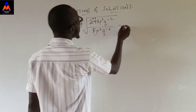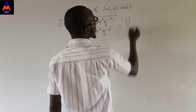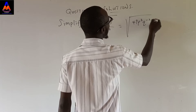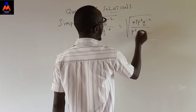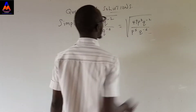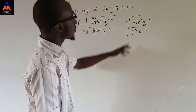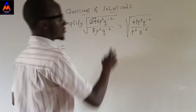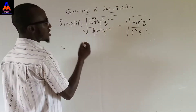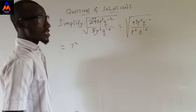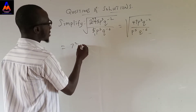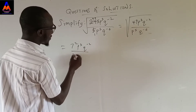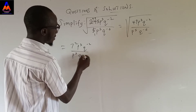So let's deal with the rest of it. This gives us 49 times p raised to the power 2 times q raised to the power minus 2, all over p raised to the power 5 times q raised to the power minus 6. We move on from there. This is in index form — let's express everything in index form. The others are already in index form, but let's express 49 in index form: 7 times 7 is 49. So we have 7 squared times p times q raised to the power minus 2, over p to the power 5 times q raised to the power minus 6.